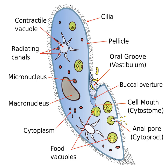Ciliophora is a phylum of protozoa. The cytostome in this phylum can be either apical or lateral. Function. The cytostome-cytopharynx complex functions as follows: macromolecules to be taken up by a cell enter the cytostome, then pass into the lumen of the cytopharynx and are transported to the posterior end of the cell where they are put into budding vesicles that are transported to other parts of the cell.